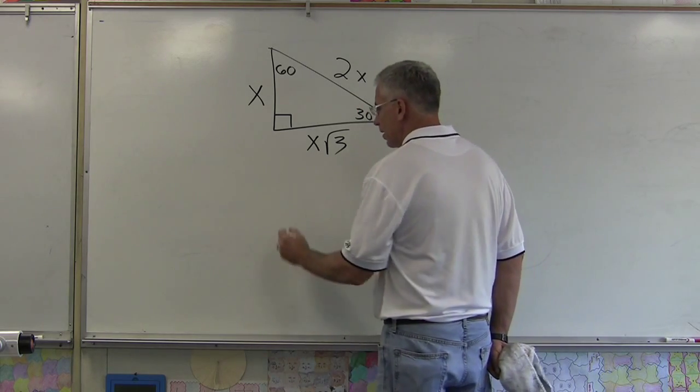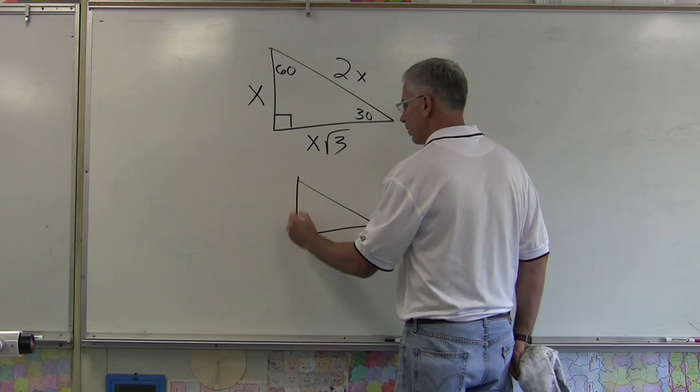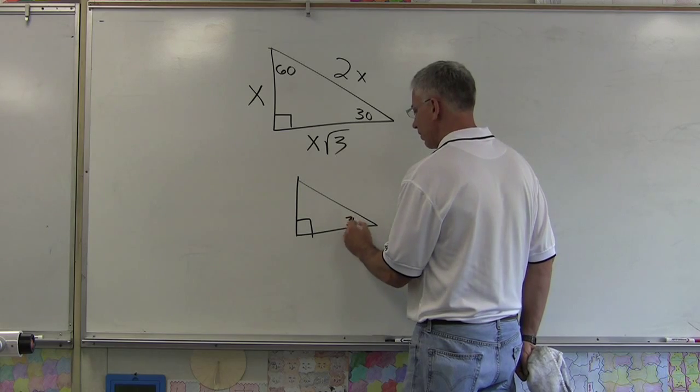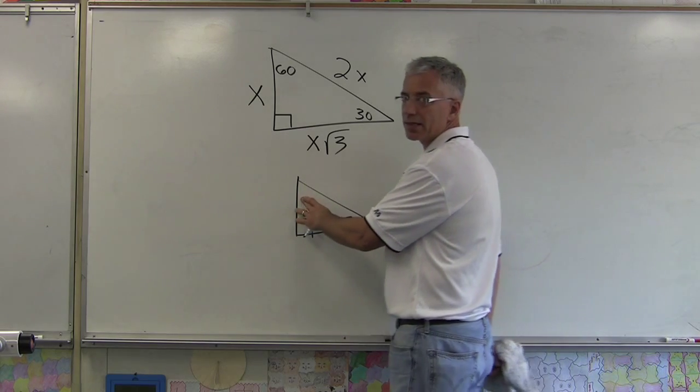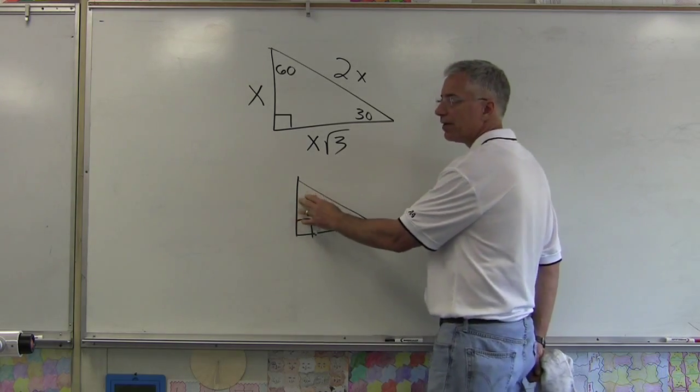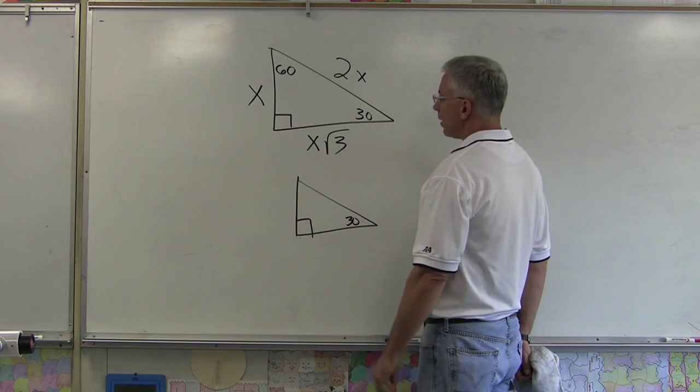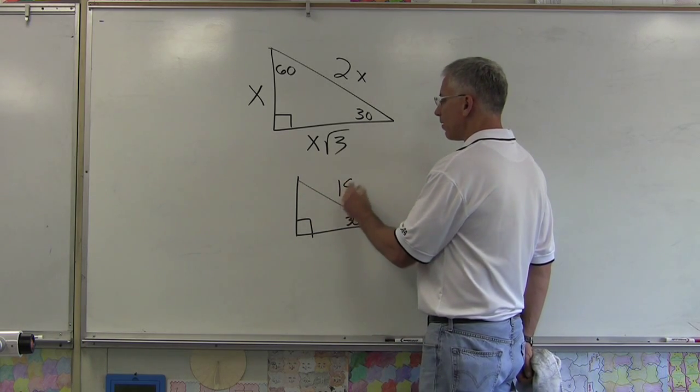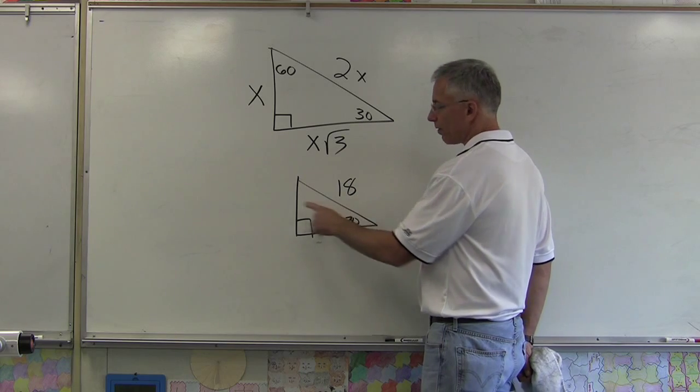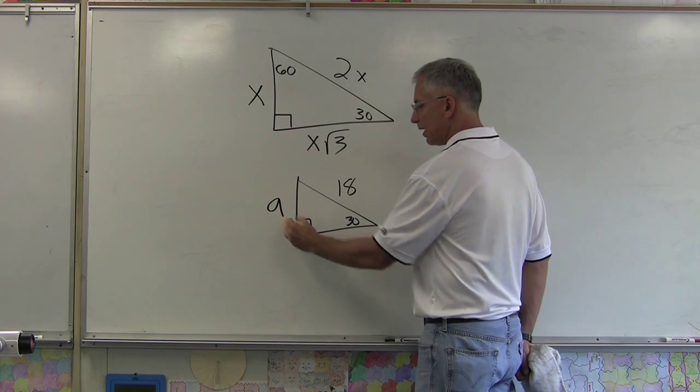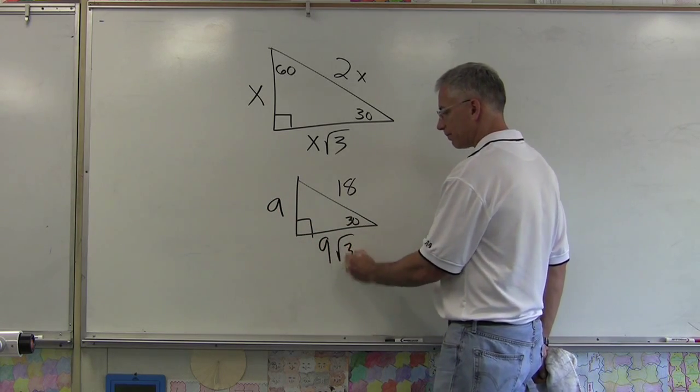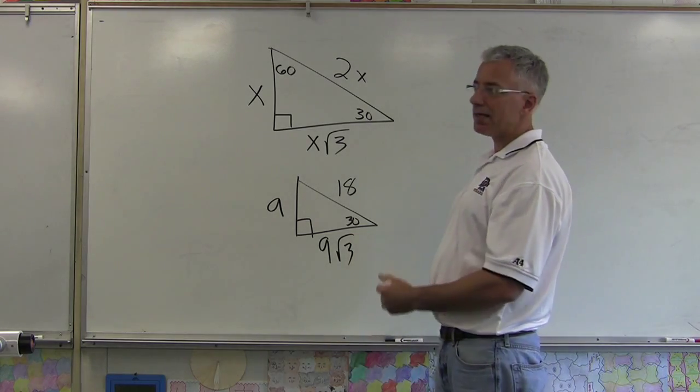So for example, if I had a 30-60-90 triangle and say that was 30—they probably wouldn't put that 60 in there, you're supposed to see that's going to be 60—and say this was 18 over here. Well if this is the hypotenuse, if I take half of that, this guy's going to be 9, and then this guy's going to be 9√3. They're not all going to be that easy, but that's the basics on 30-60-90s.